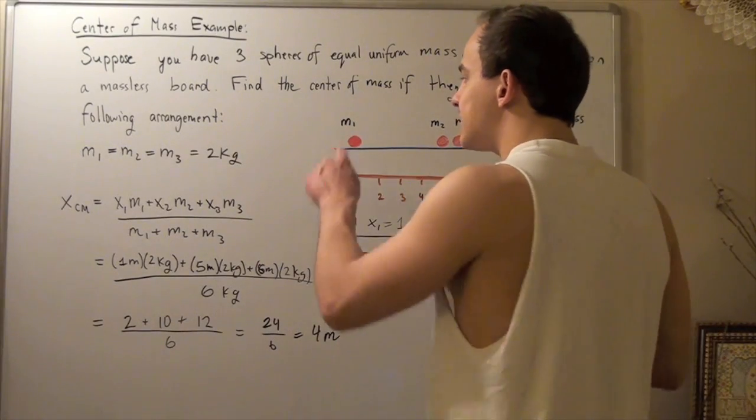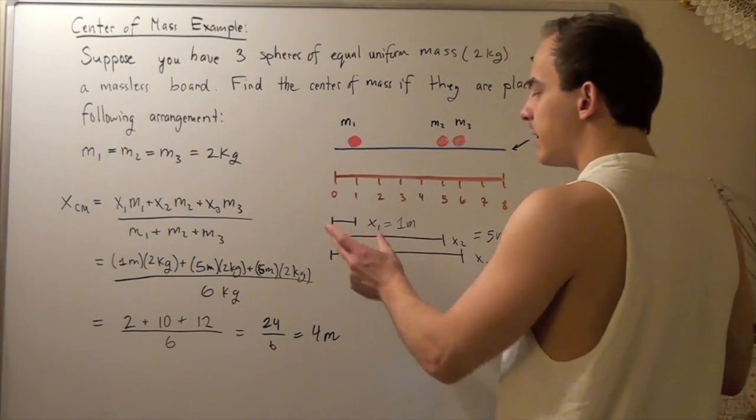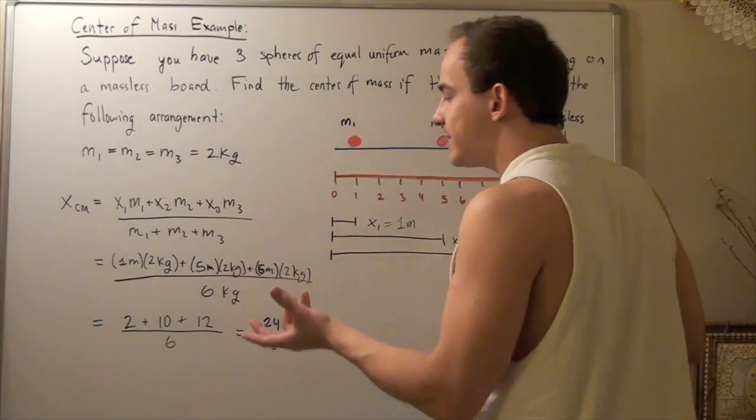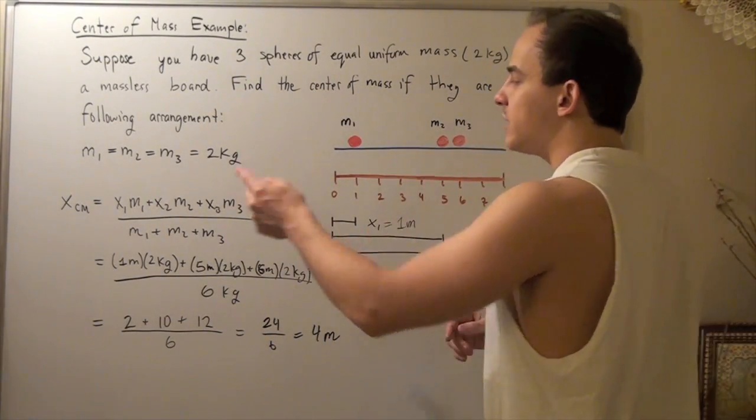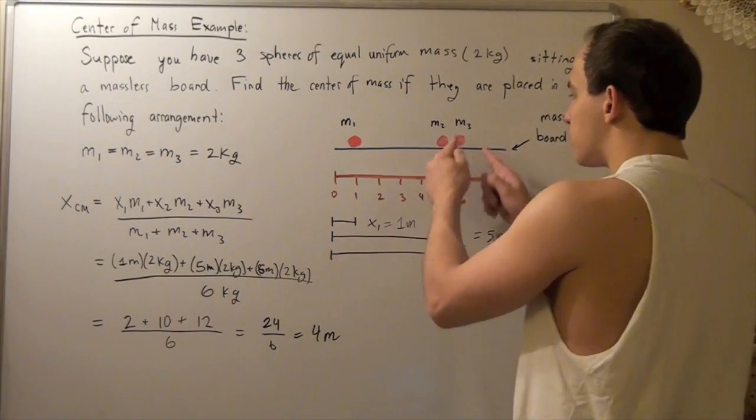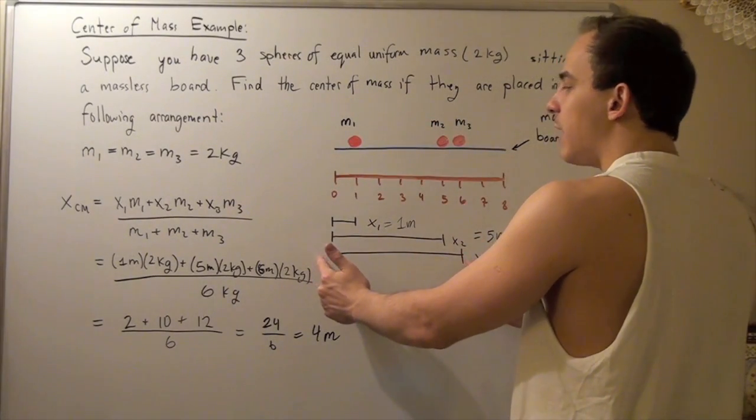We're basically taking mass number one and multiplying by this distance. Then, we're adding it to mass number two multiplied by this distance. And finally, we're adding that to mass number three multiplied by the final distance.